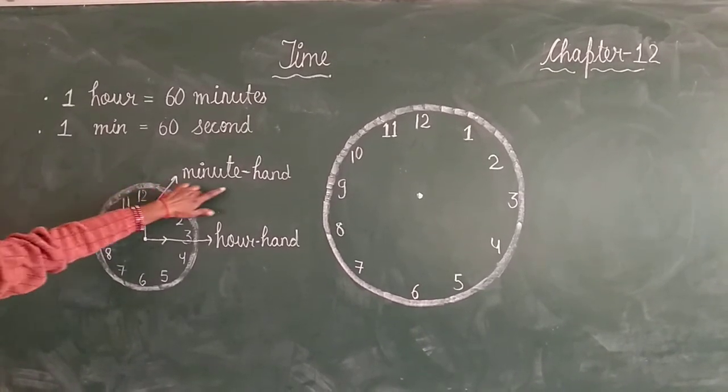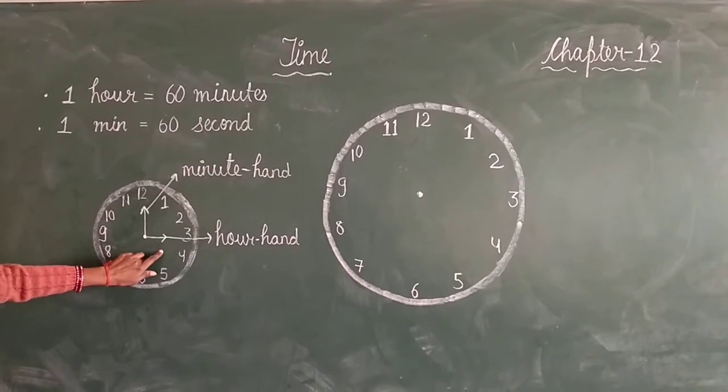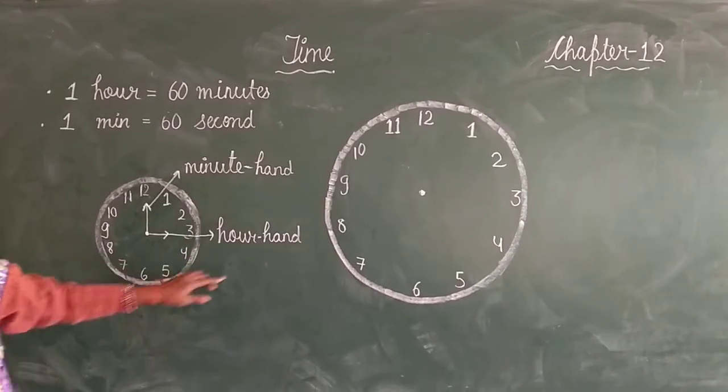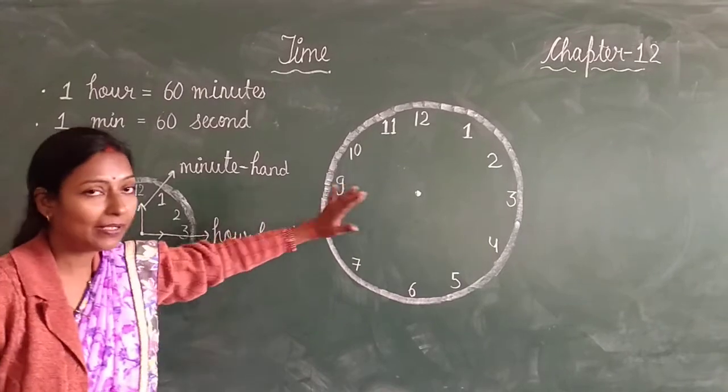The long hand we call the minute hand and the short hand we call the hour hand. For example, I will tell you how you can see the time.